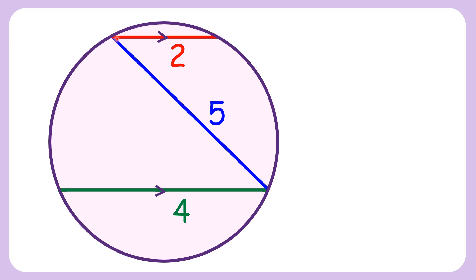In this interesting question, we are given two red and green chords parallel to each other, and a third chord is drawn joining the opposite ends of these two chords. Using this data, we have to find the radius of the circle.